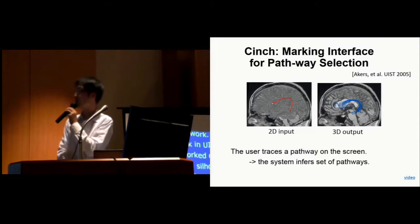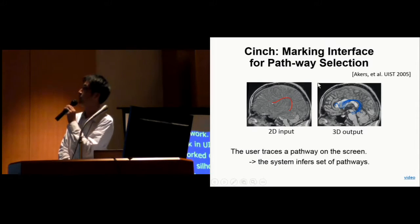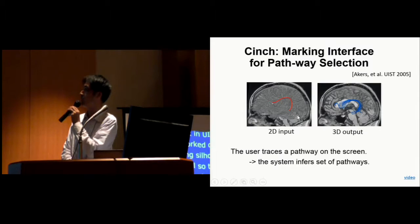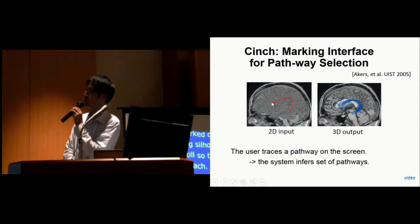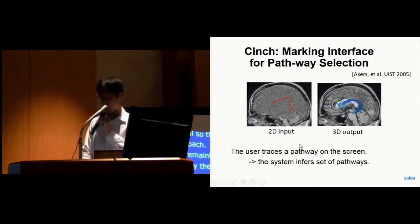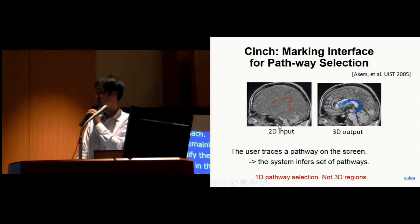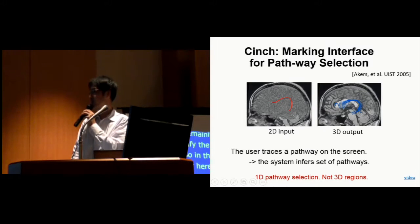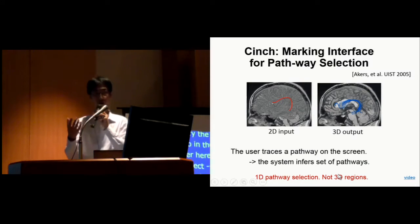In the same year, there was a UIST paper here. This was designed for identifying linear structure. Again, user draws a two-dimensional stroke on the screen, and then system returns 3D pathways that are similar to this stroke. This is very useful again, but this is designed for 1D pathway selection, and this is not designed for 3D surfaces.